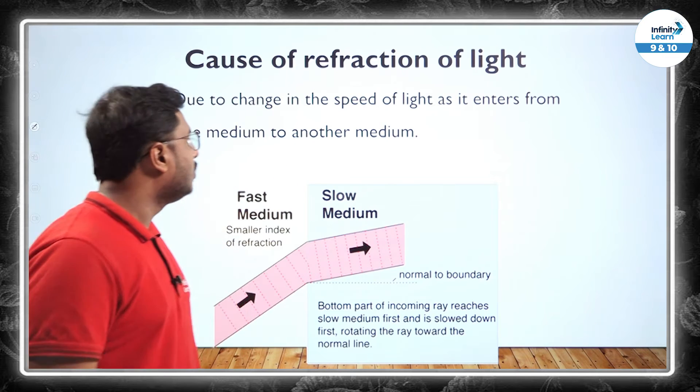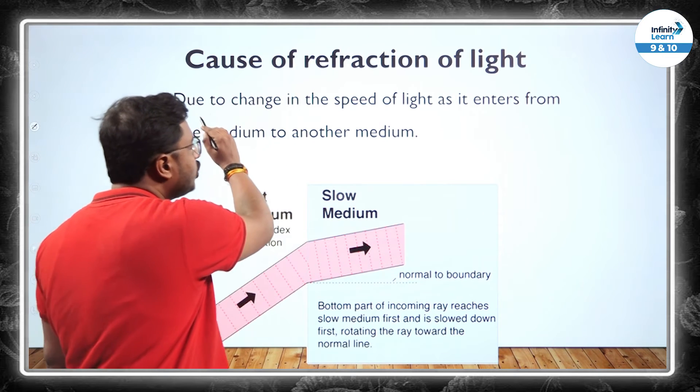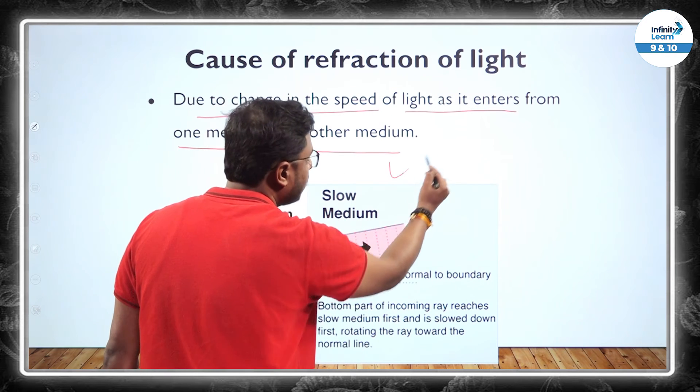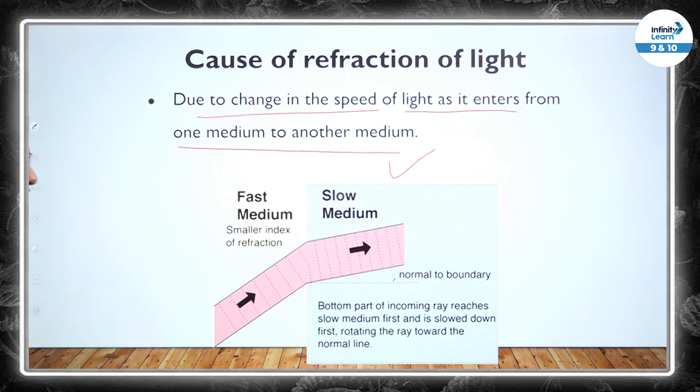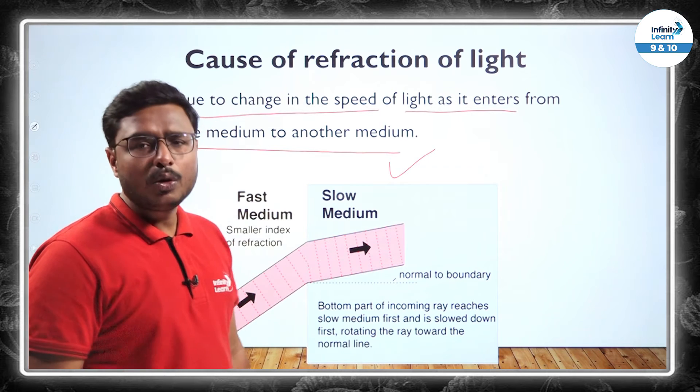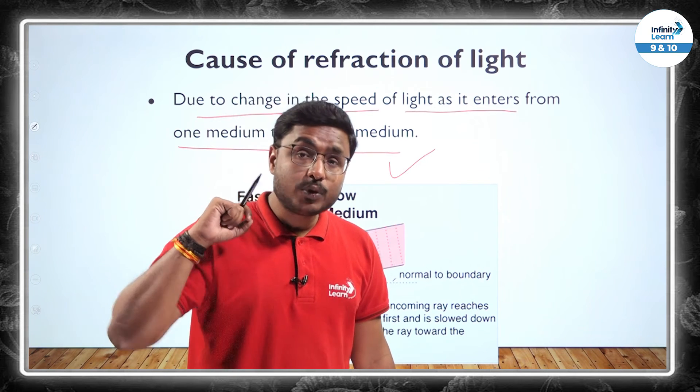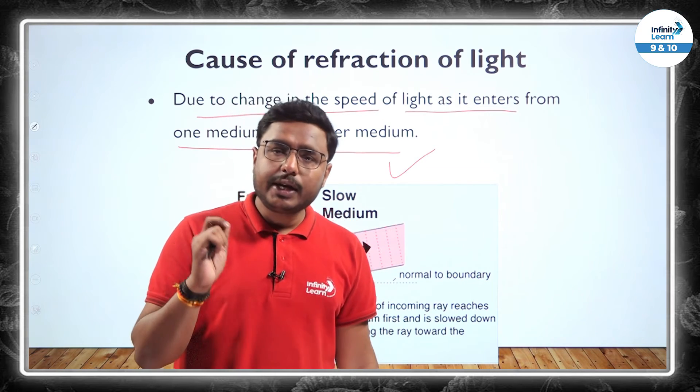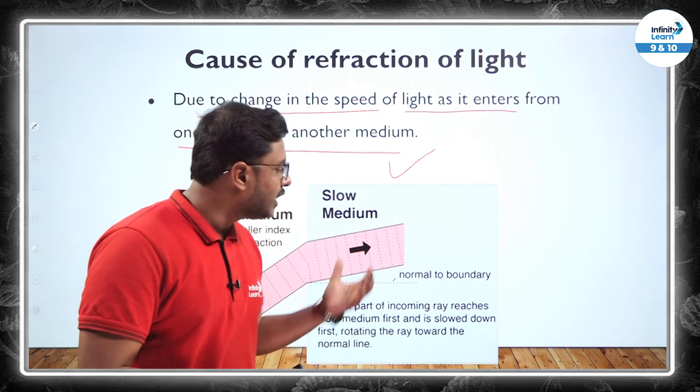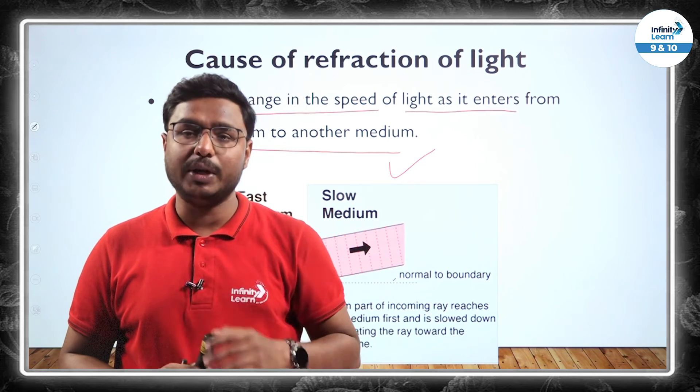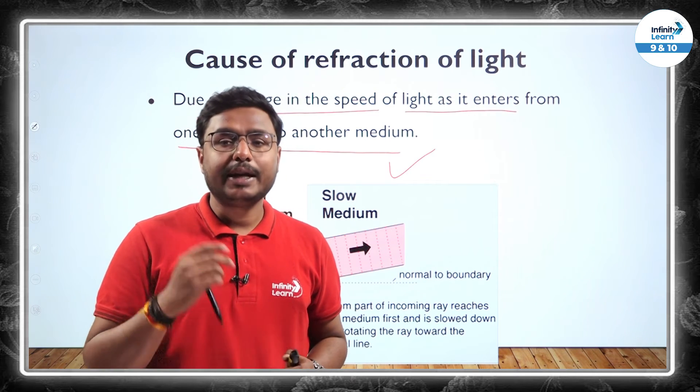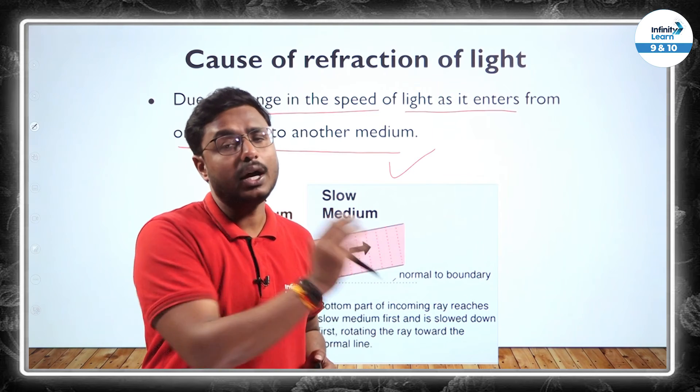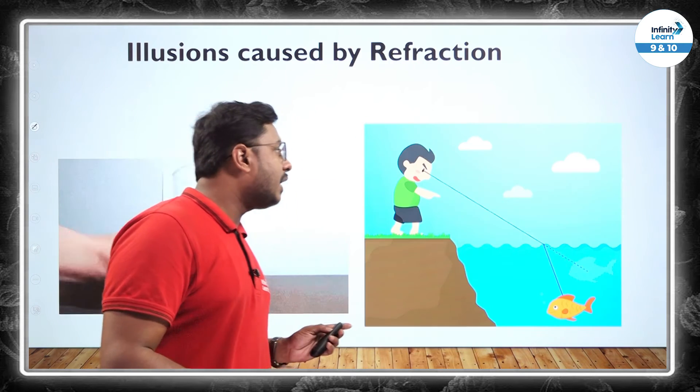Now the next thing which we are talking about, due to change in the speed of light as it enters from one medium to another medium, there will be the change in path. So if you see fast medium, slow medium. Now this confusion may also arise in your mind, which one is rarer, which one is denser? Rarer medium is the medium in which the speed of light is more in comparison to the other medium. And denser medium is something where the speed of light is less in comparison to another medium. So that's how we are deciding it.